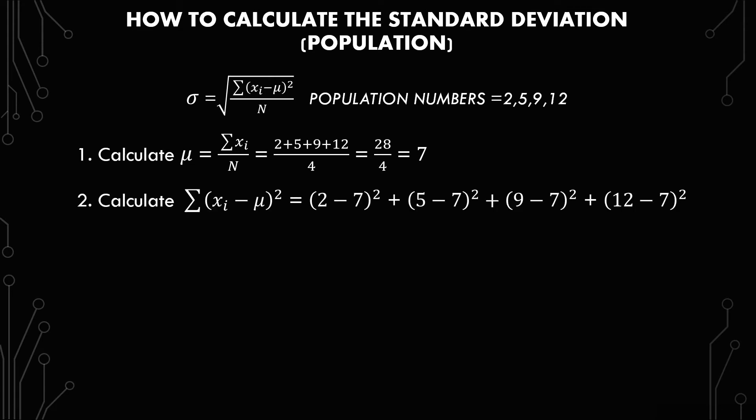The next thing is to take each x and subtract it by mu and then square it. So just like x bar, it's the exact same process. 2 minus 7 squared plus 5 minus 7 squared plus 9 minus 7 squared plus 12 minus 7 squared. So our number is subtracted by the mu squared.